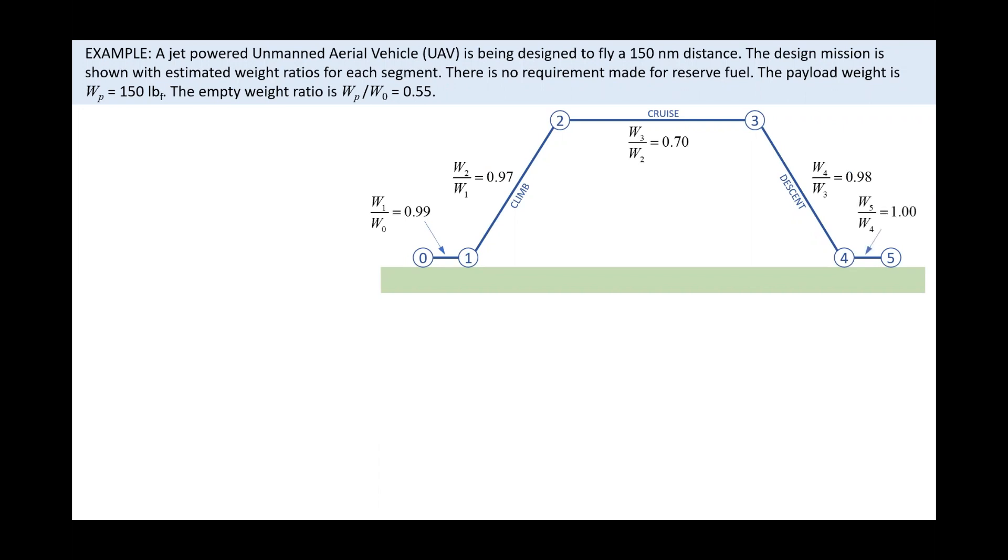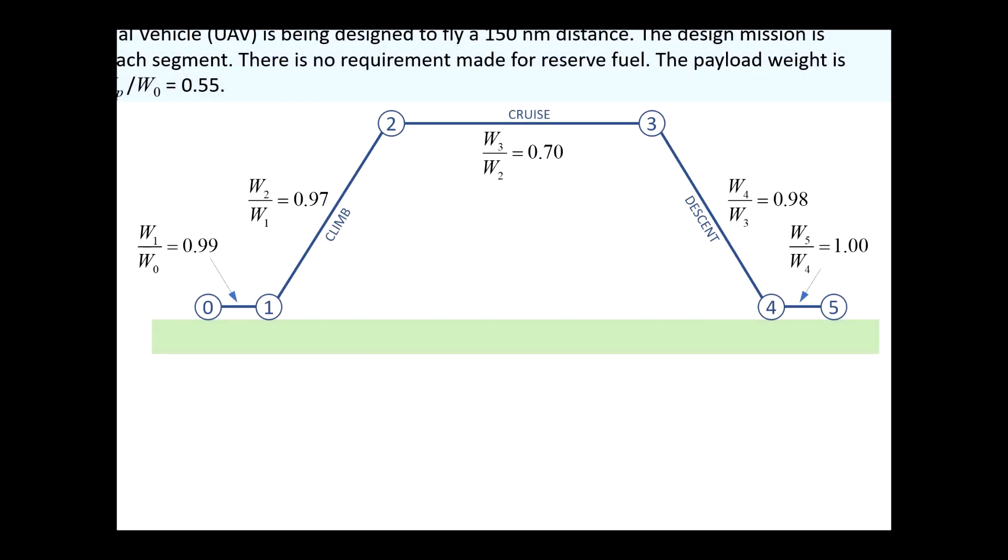First note that the entire mission is represented using segments connected using points we call nodes. The segment from node 0 to 1 represents engine start-up, taxi into take-off position, and subsequent take-off.